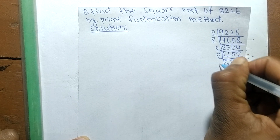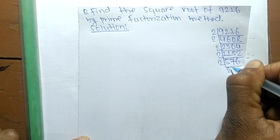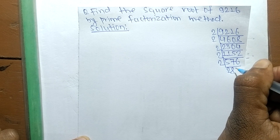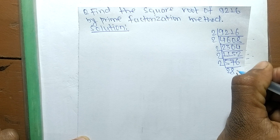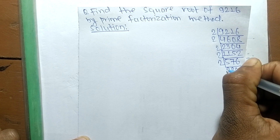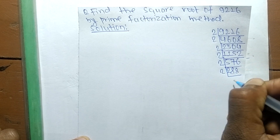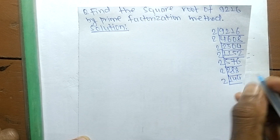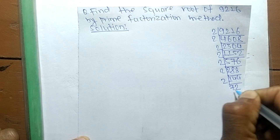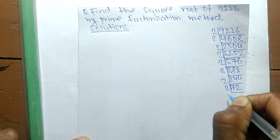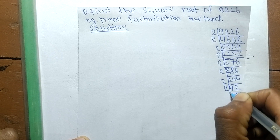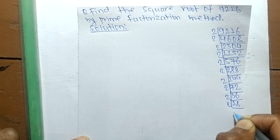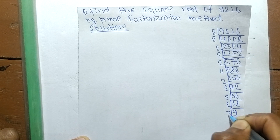2 times 6 means 12, remainder 1. 2 times 8 means 16, remainder 1. 2 times 8 means 16, 2 times 1 means 2. 2 times 7 means 14, 2 times 2 means 4, 2 times 3 means 6, 2 times 6 means 12. Then 2 times 18, 2 times 9, and 3 times 3. So these are the prime factors of 9216.